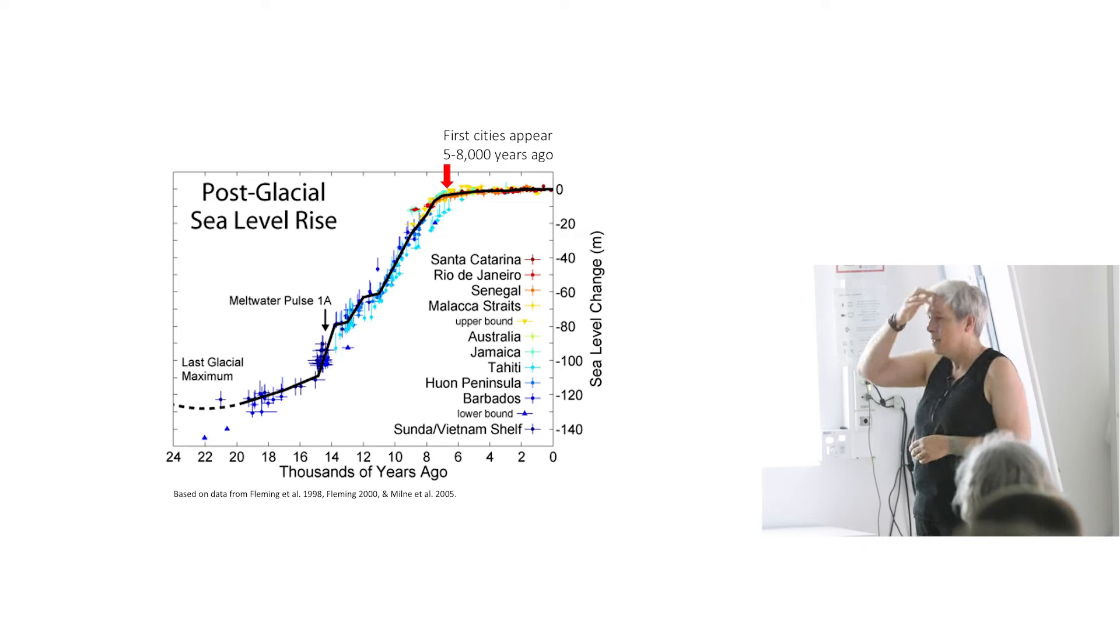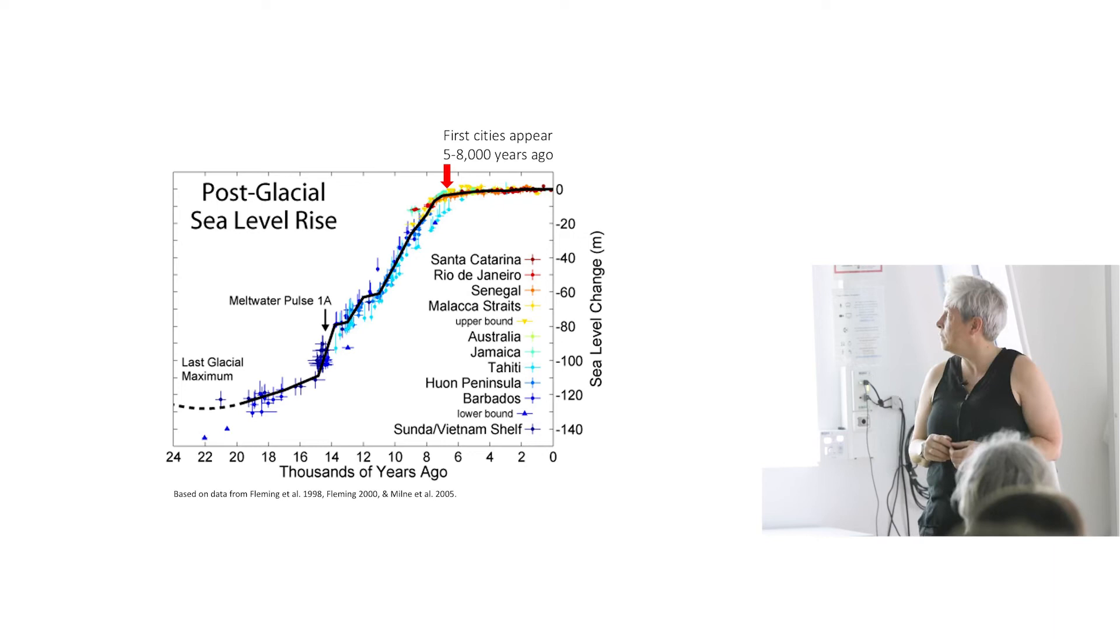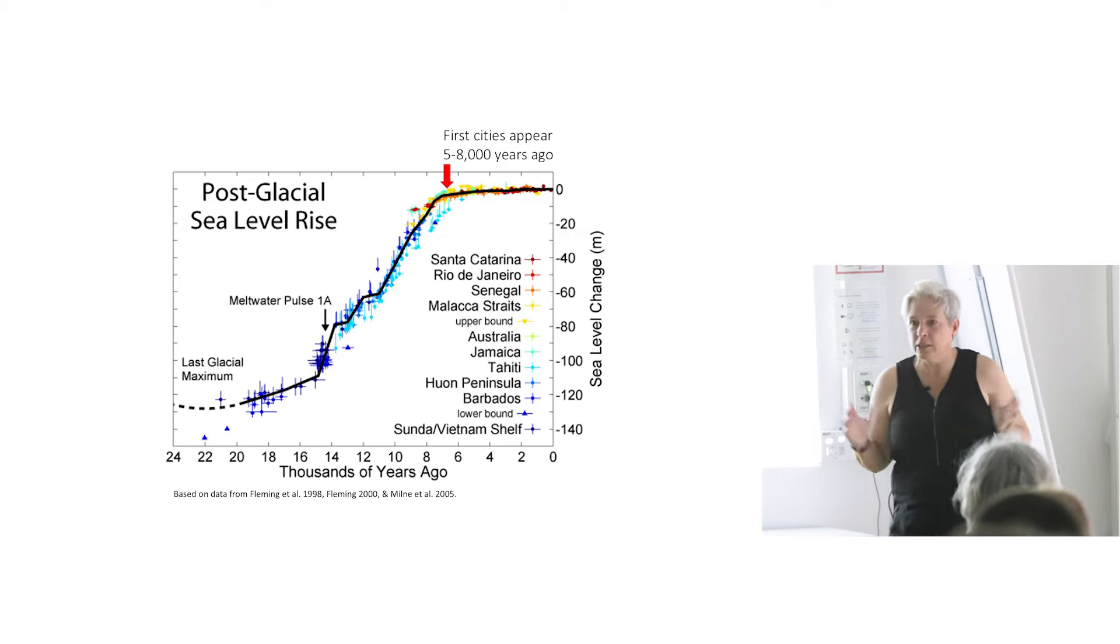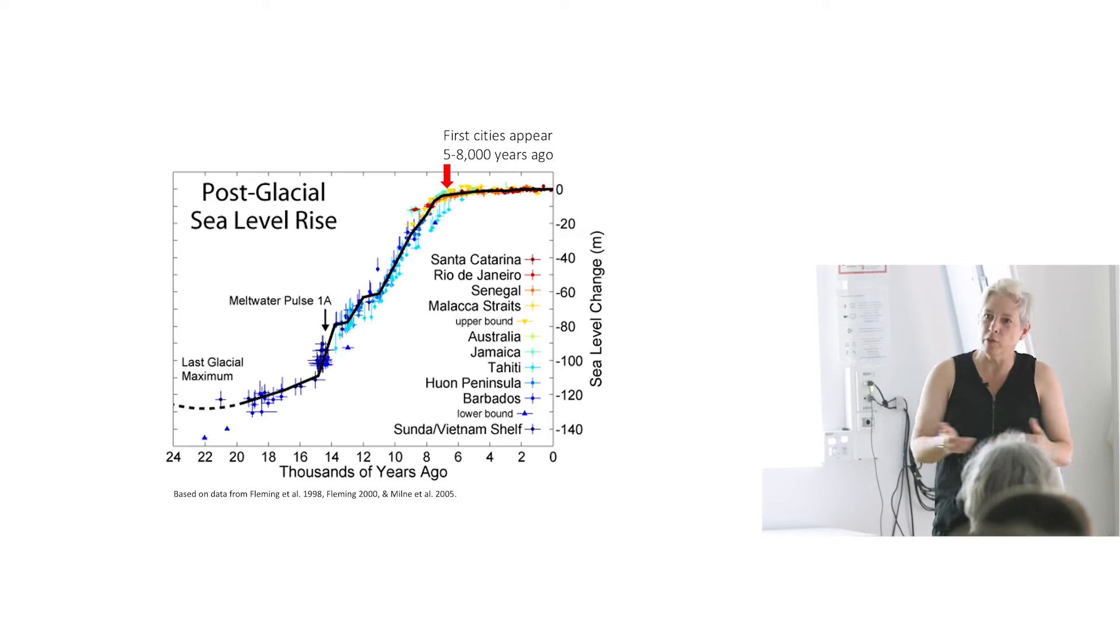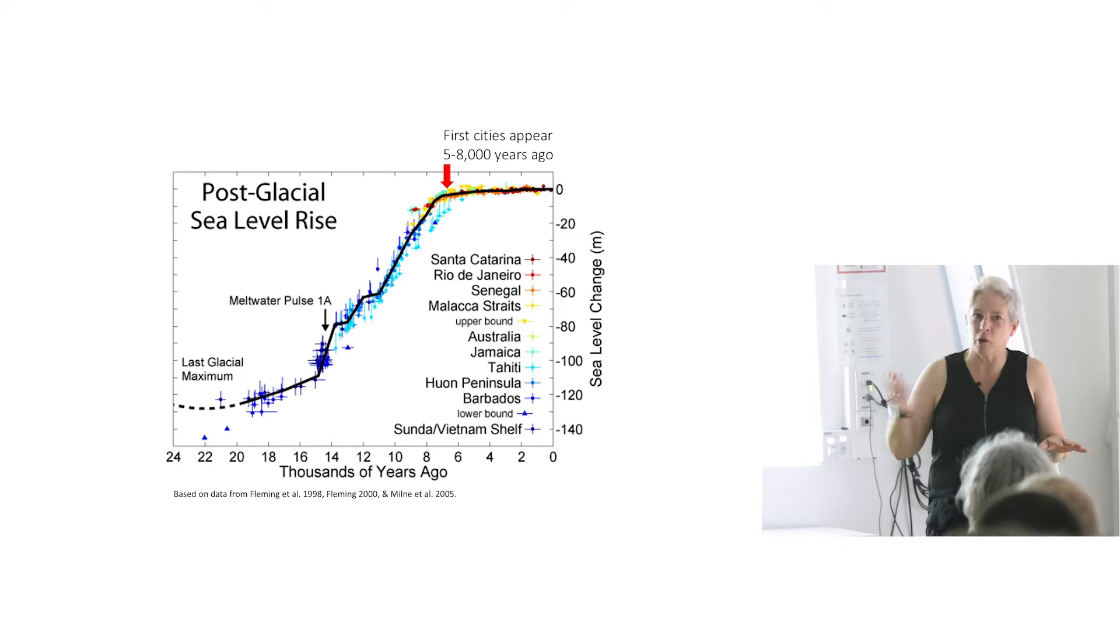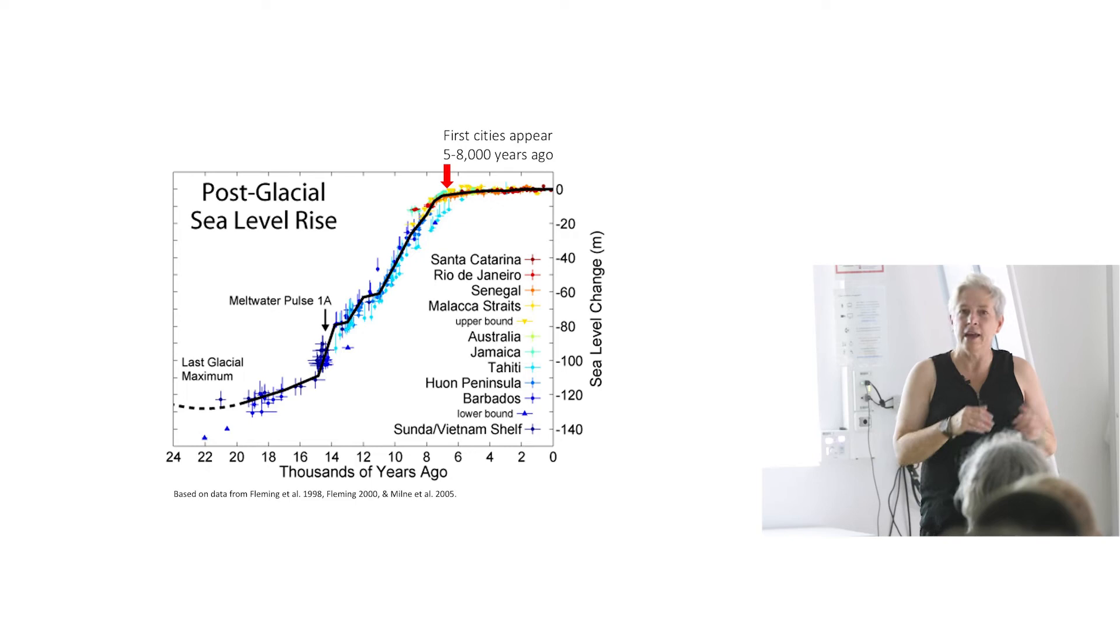Since about 10,000 years ago in the beginning of the Holocene period, we've seen a very slow rise in sea level to the point where the world's deltas formed because that conveyor belt of sand and silt coming down rivers was dumping all that material in one spot for the last 10,000 years.